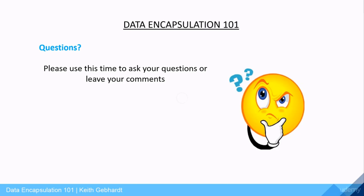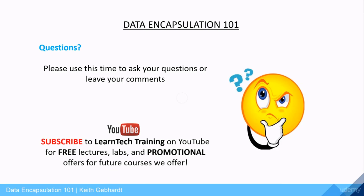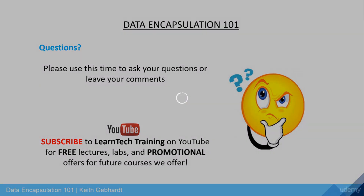You've now seen all the details for each of the three main parts of data encapsulation: Layer 4 segments, Layer 3 packets, and Layer 2 frames, and how data link frames change when going through different networks. In the next lecture, you'll see an animation going from start to finish through the entire encapsulation process. If you have any questions, please leave your comments, and don't forget to check out LearnTech Training on YouTube for free lectures, labs, and promotional offers.